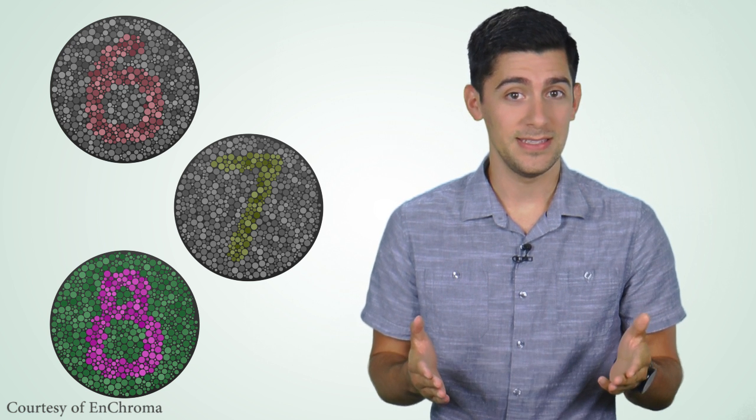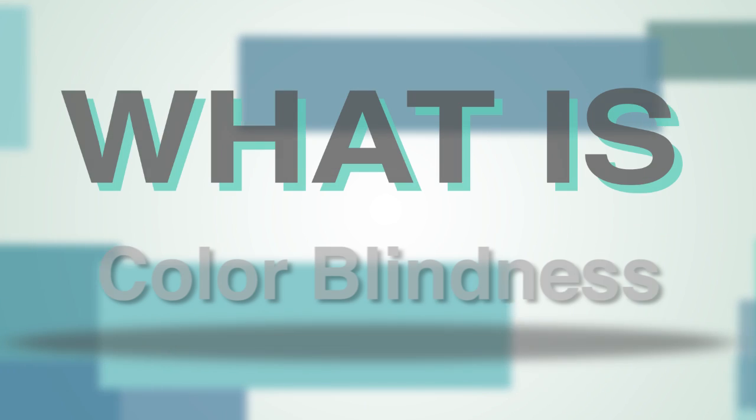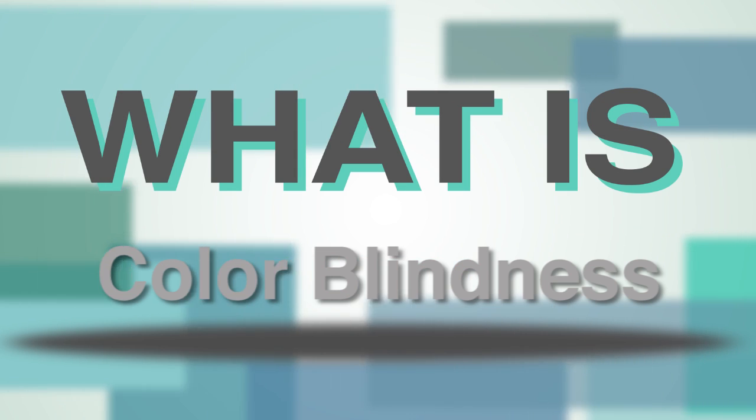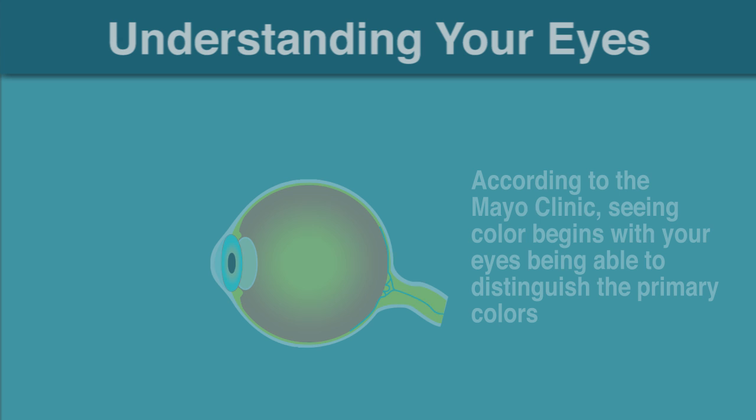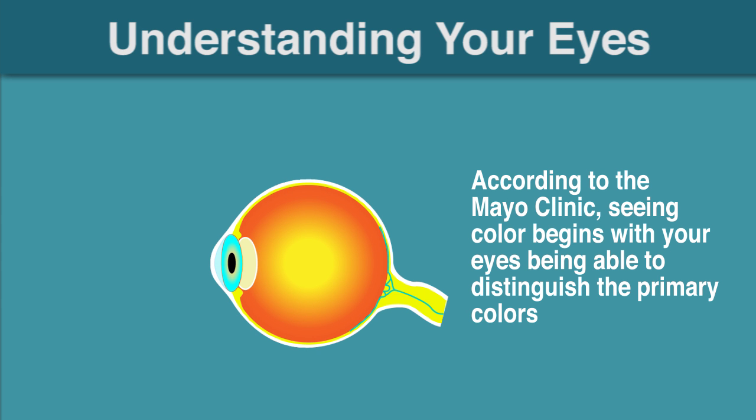So what is colorblindness? In order to figure out what poor color vision is, let's first discuss the eye. According to the Mayo Clinic, seeing color begins with your eyes being able to distinguish primary colors: red, yellow, and blue.